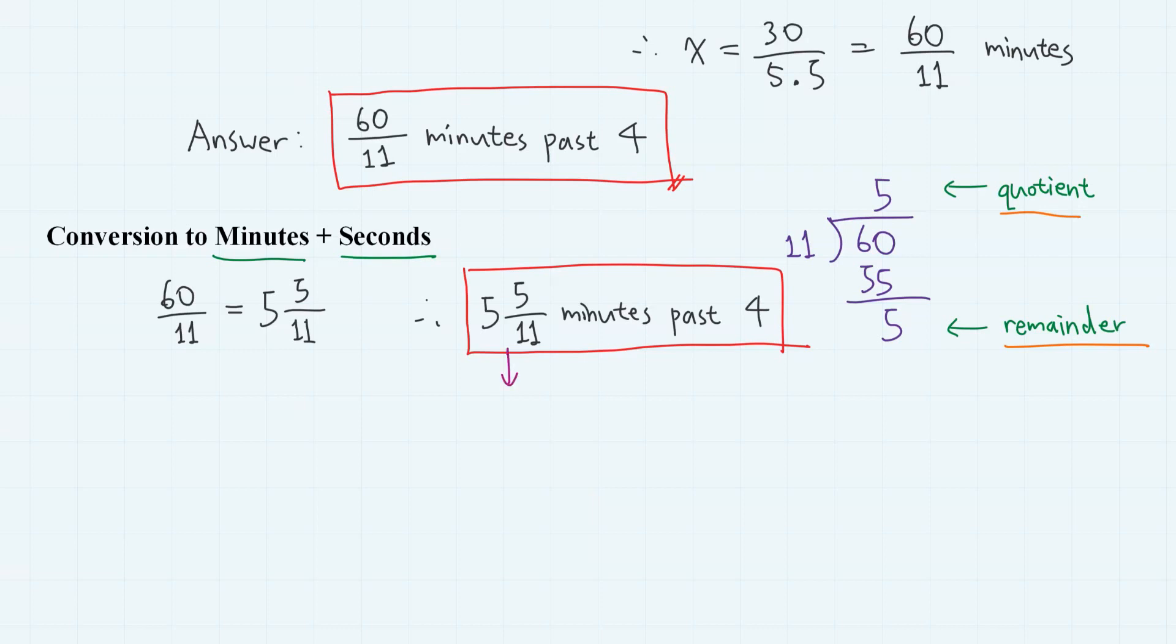This means 5 minutes plus 5 over 11 minutes, where this part is less than a minute. So let's convert this 5 over 11 minutes into seconds.